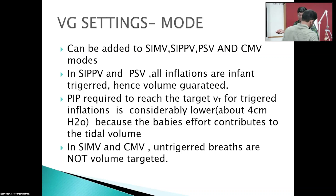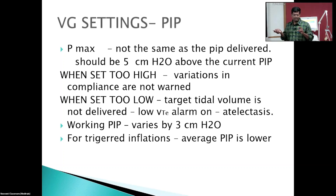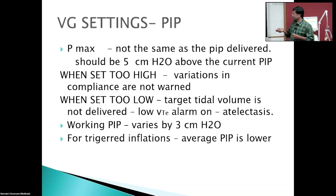In SIMV and CMV there will be untriggered inflations also, and these inflations are not volume targeted. For PIP settings, there are two values: the average working PIP — for example 18 cmH₂O for a 2 kg baby with RDS — and a P-max set about 5 cmH₂O above the average PIP. The PIP is allowed to scale up to the P-max or come down as the baby's lung compliance improves.